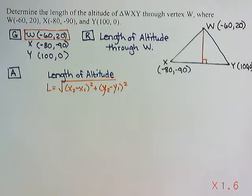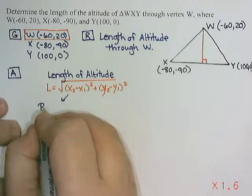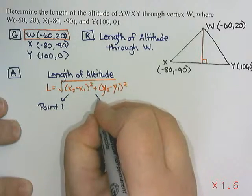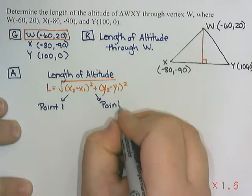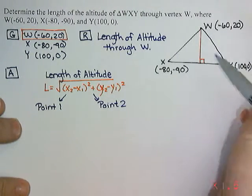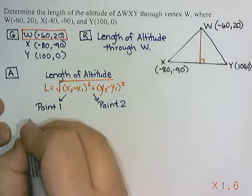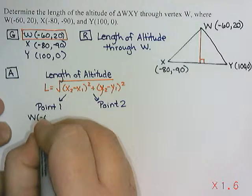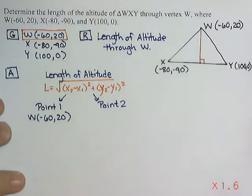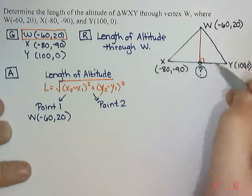In order to calculate the length, I need to have an x₂, an x₁, a y₂, and a y₁, which are going to come from two points. So I need two points. Now those two points need to be the endpoints of my altitude. So one of those points is going to be W because it's at one end of the altitude. But the other end is unfortunately an unknown point that I don't currently know.